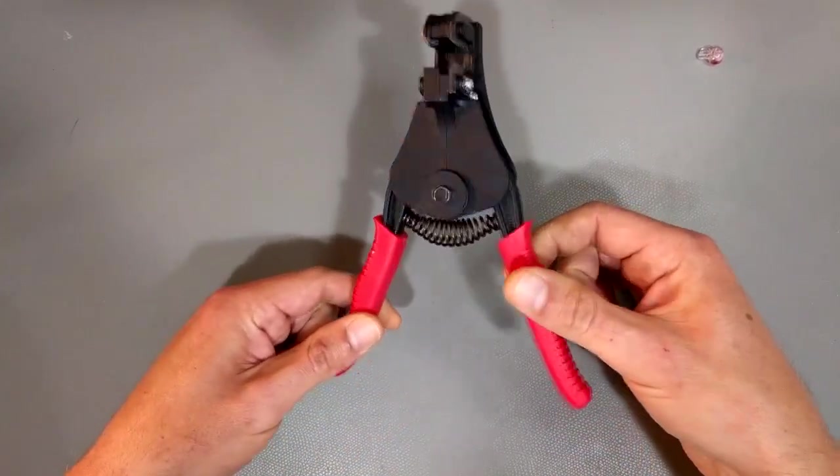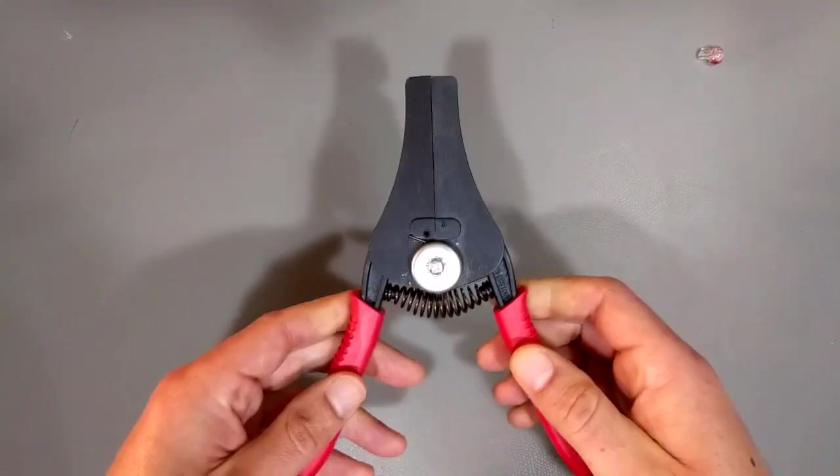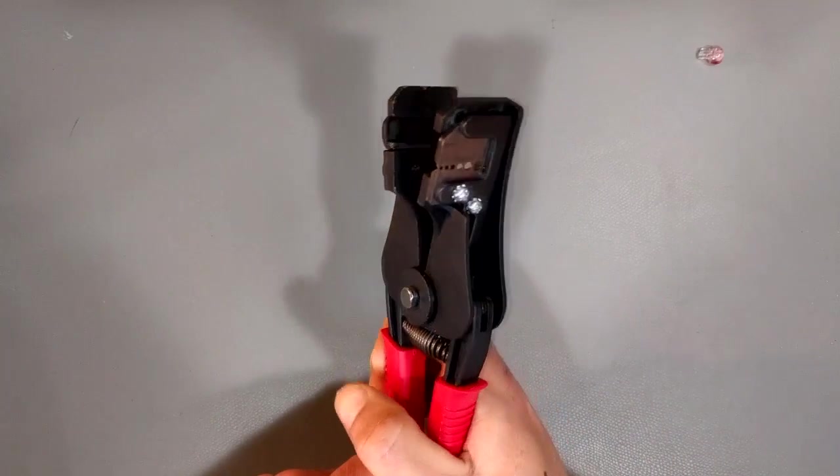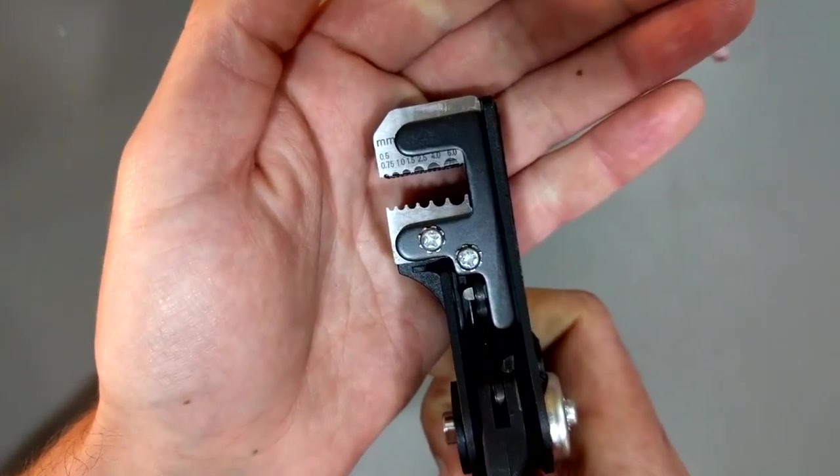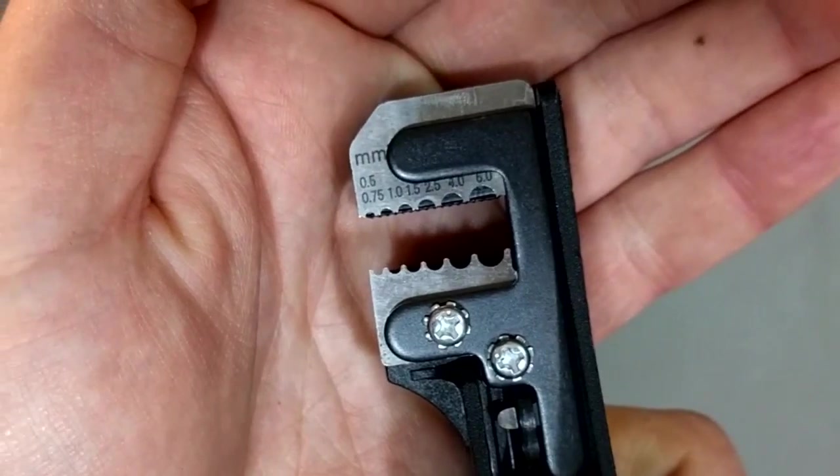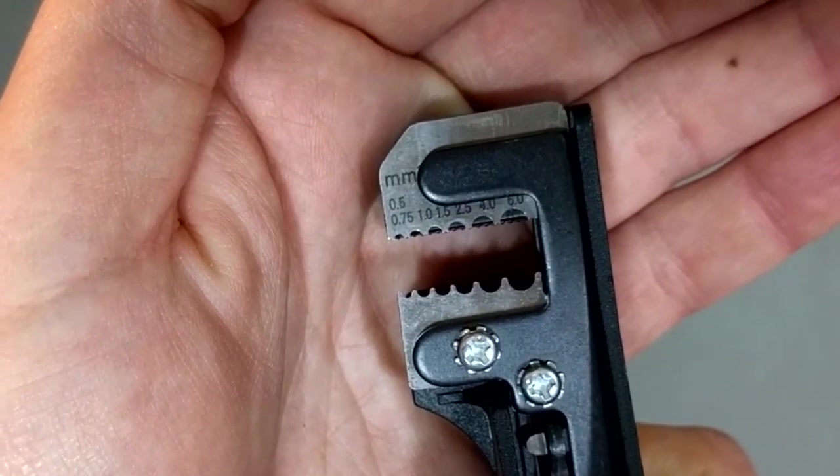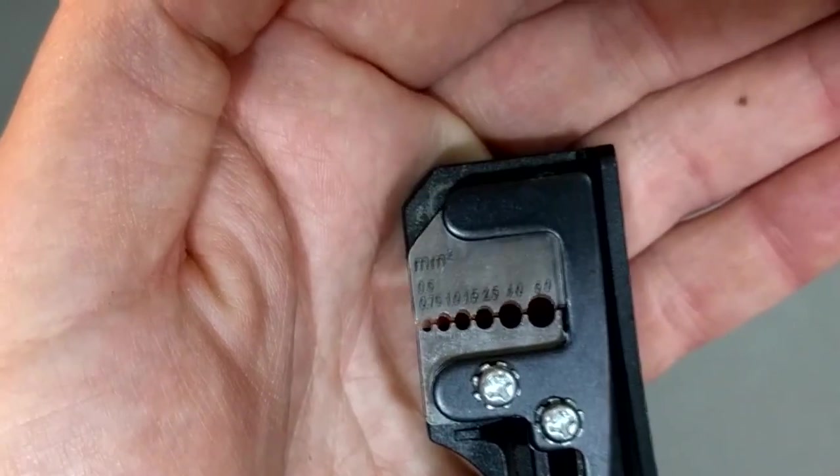So these are my preferred wire strippers. They look kind of funky. That's what happens when you squeeze the handle. You can see here you've got these little markings here in millimeters squared. So you've got 0.5, 0.75, 1, 1.5 square millimeter, 2.5, 4, and 6 square millimeter.